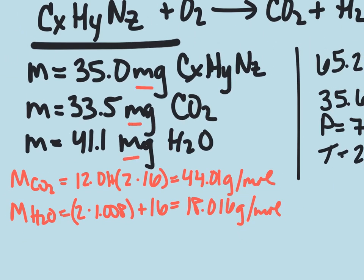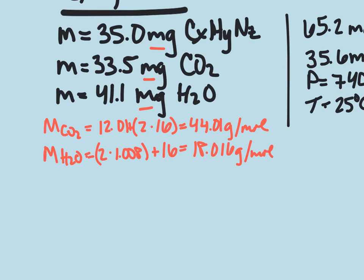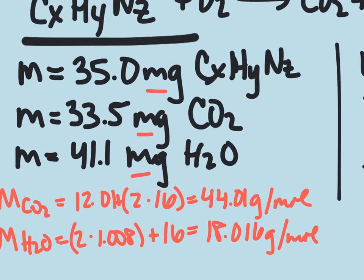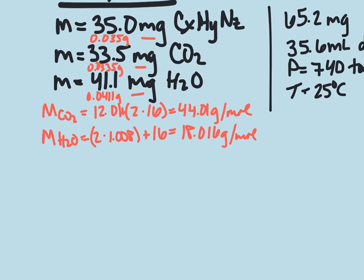These we're obviously going to have to convert into grams. So we're going to be moving our decimal places three places to the left. So this will be 0.035 grams, 0.0335 grams, and 0.0411 grams.